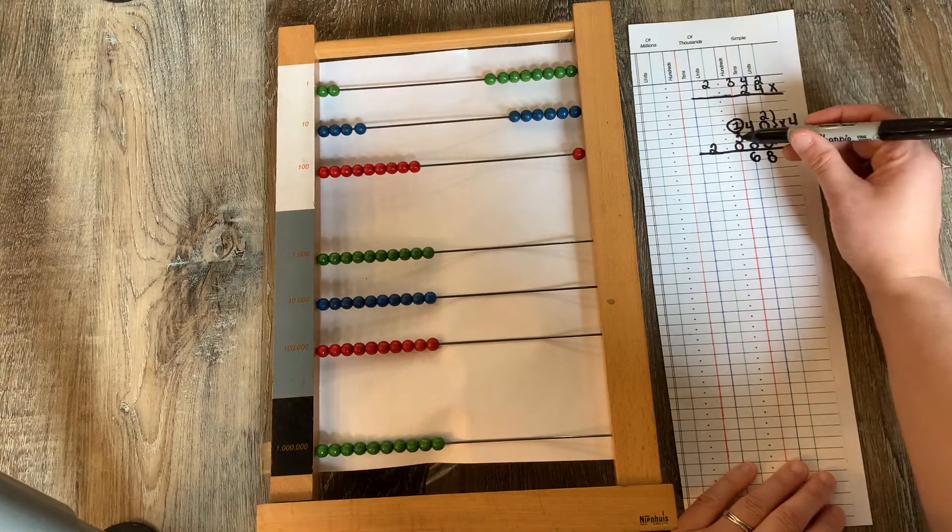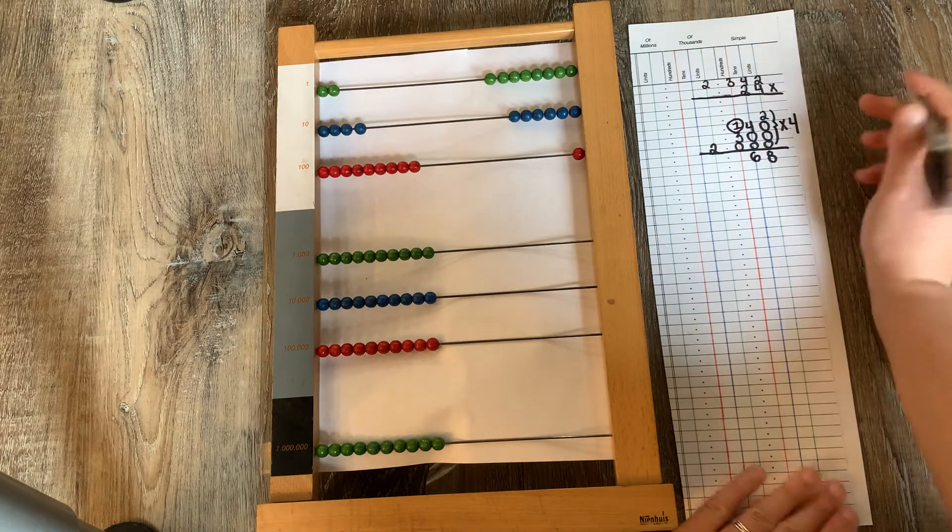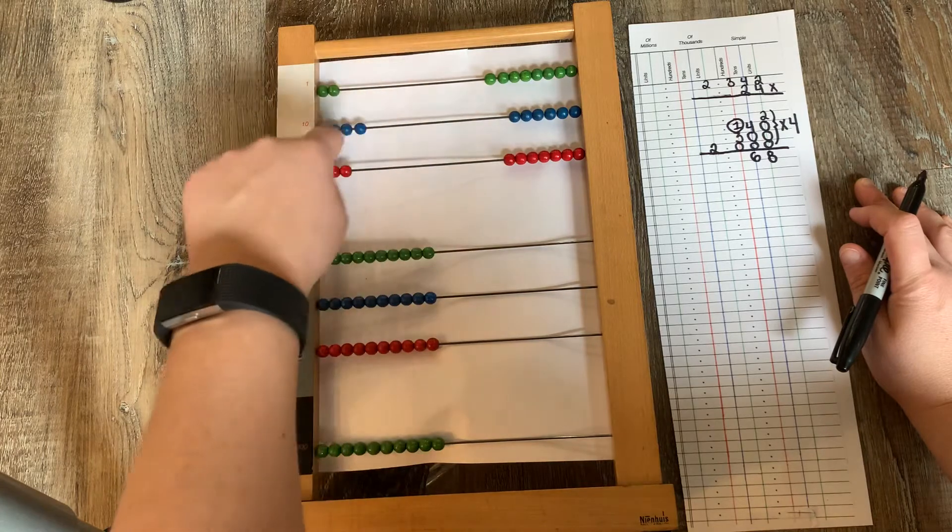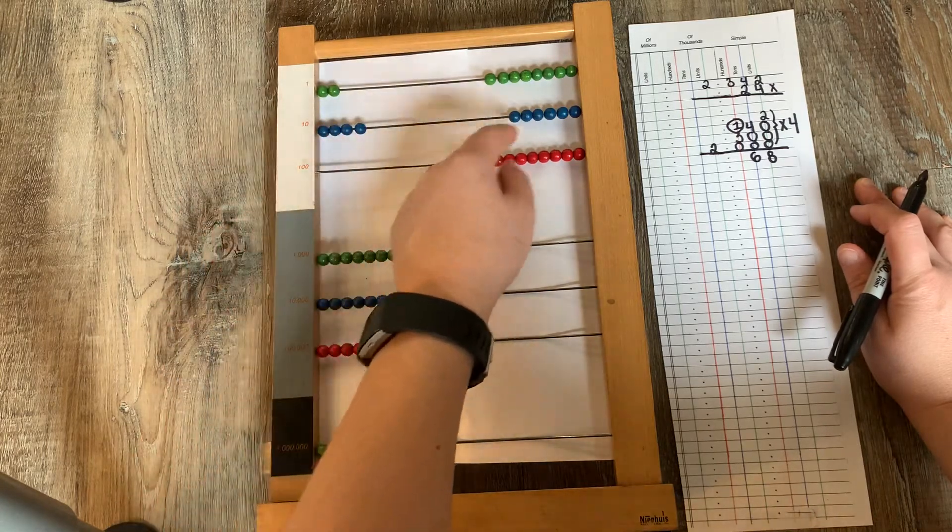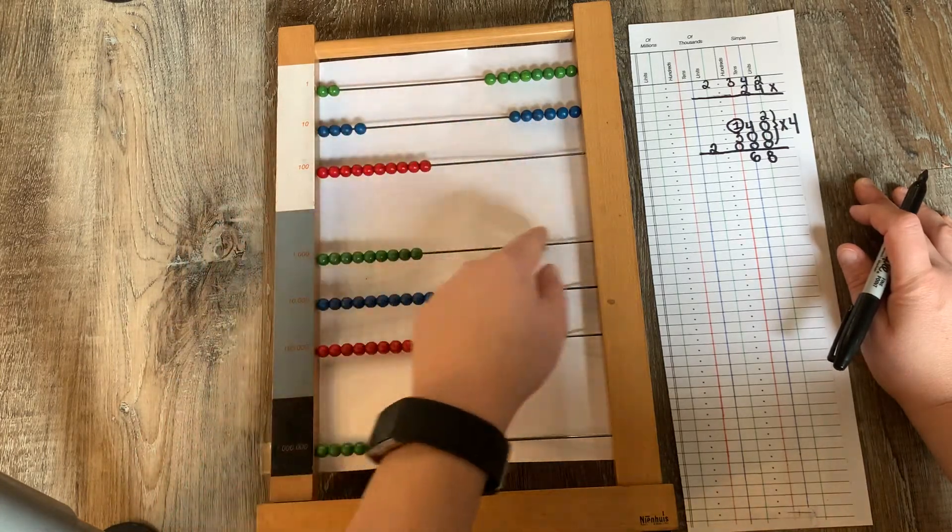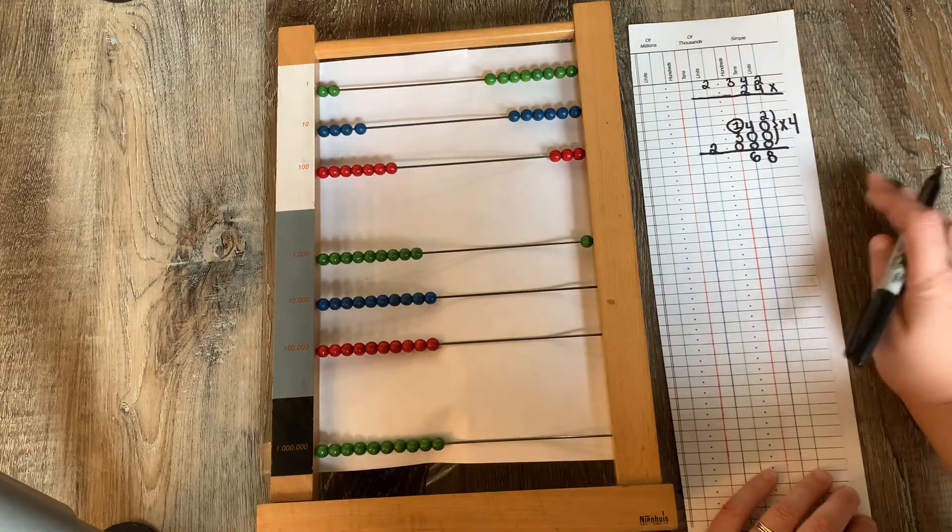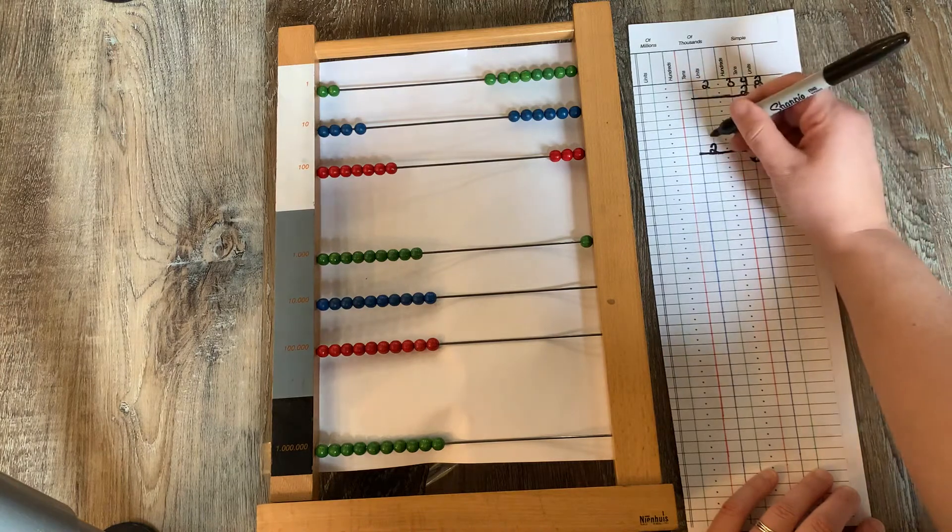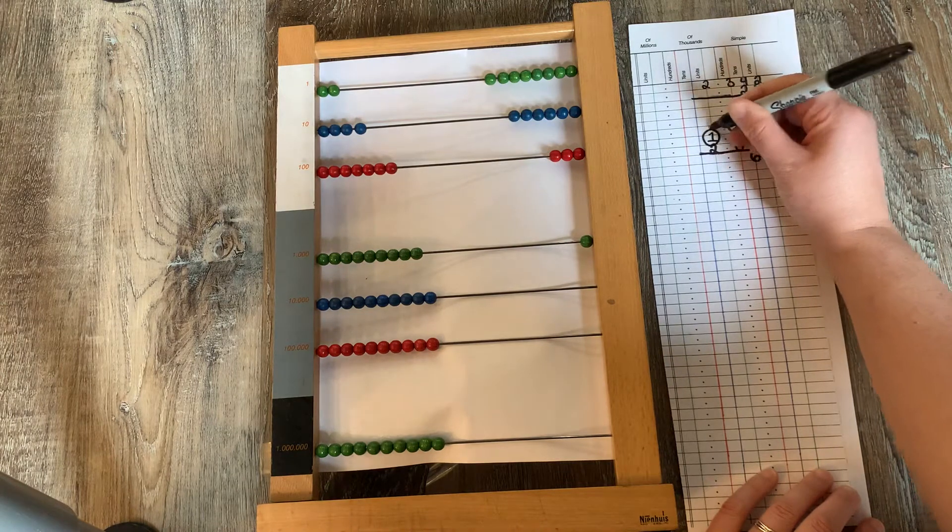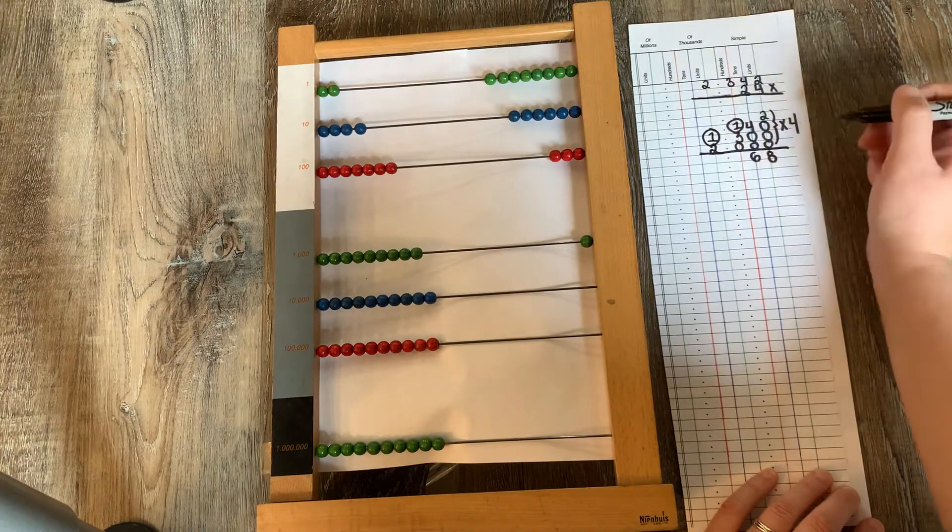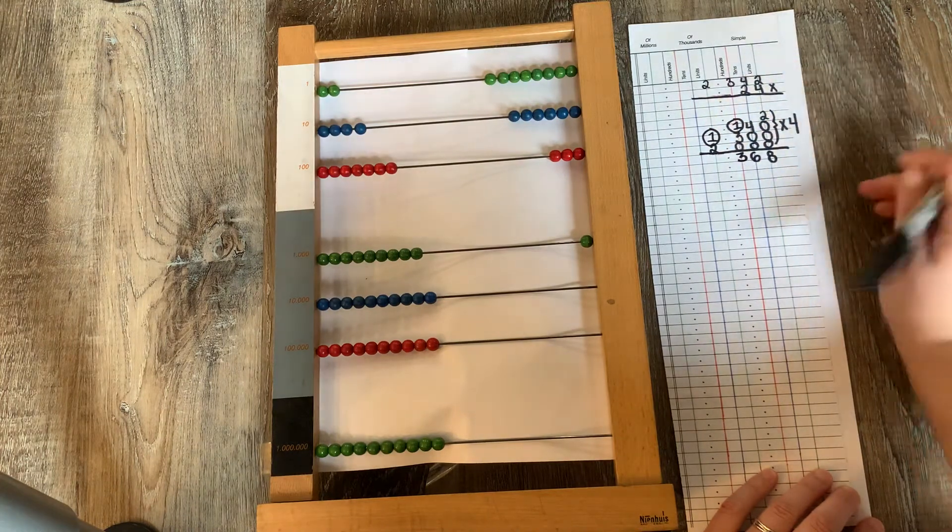Now I have three hundreds taken four times. One, two, three, one time. One, two, three, two times. One, two, three, three times. Exchange. One, two, three, four times. Well, now I know I exchanged 1,000 and I have three hundreds on my hundreds.